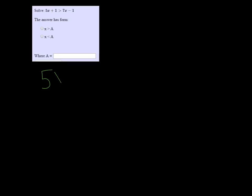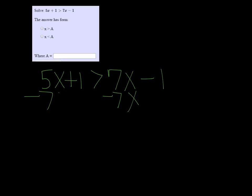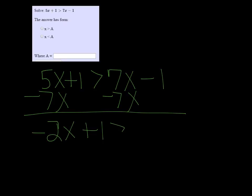We're going to solve 5x plus 1 greater than 7x minus 1. I'm going to subtract 7x on both sides to get my variable over on the left, and I get negative 2x plus 1 is greater than negative 1.